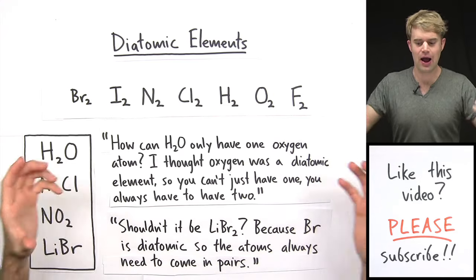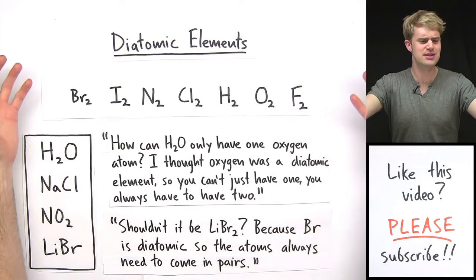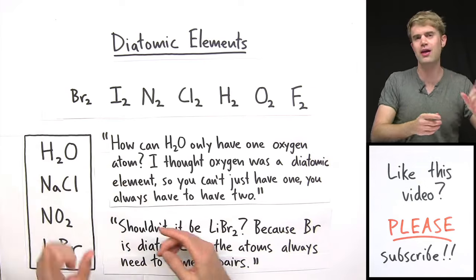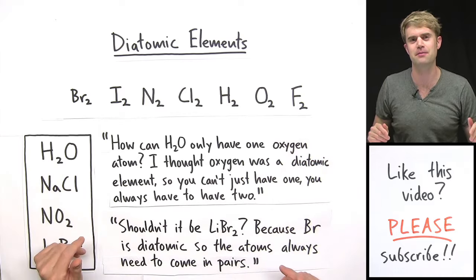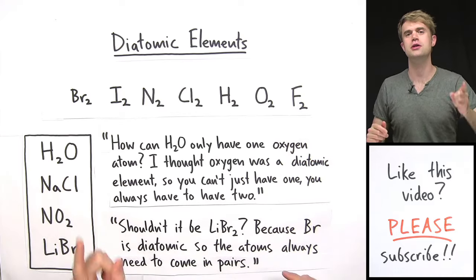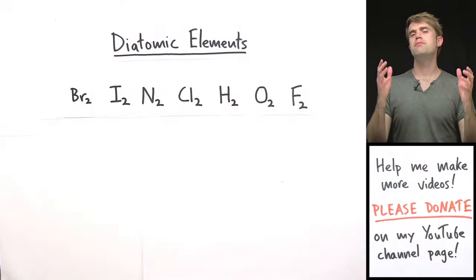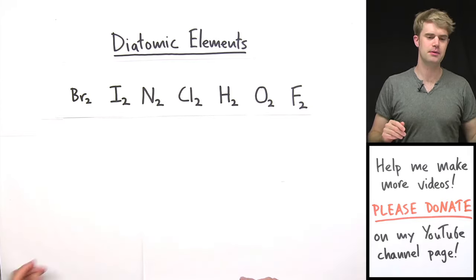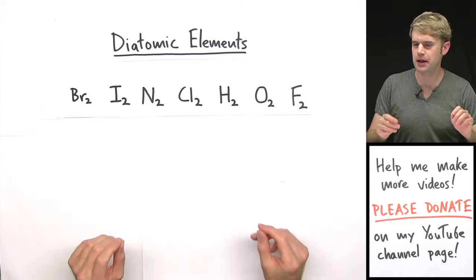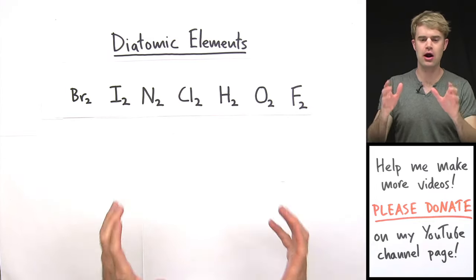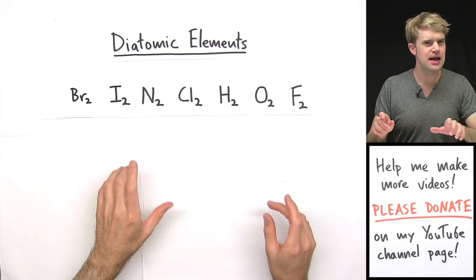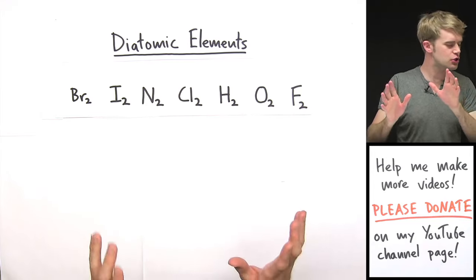So what's going on here? How come the diatomic elements, we say that they have to come in pairs and then we write all these formulas where we only have one atom of a diatomic element? These are great questions, let's talk about this. So here's a big thing that sometimes is like the missing piece for people's understanding with the diatomic elements.